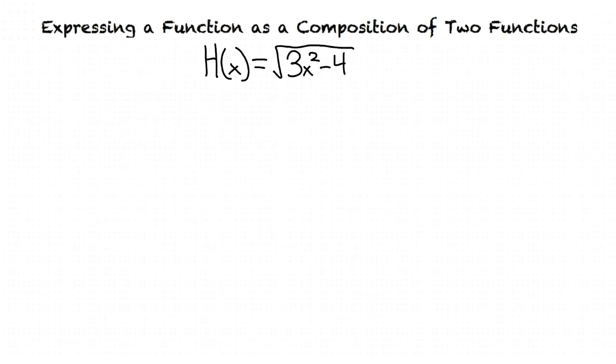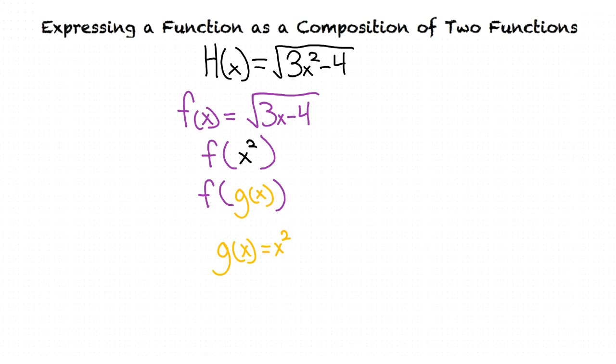For this problem, we're going to make f of x equal the square root of 3x minus 4. This leaves us with f of x squared. Remember that for this problem, we are looking for f of g of x. Since we already have our f, we look to see what remains in our function. Since x squared is all that remains in our function, this gets us g of x equals x squared.